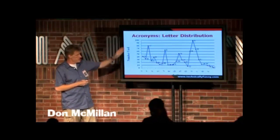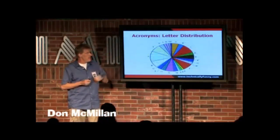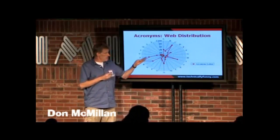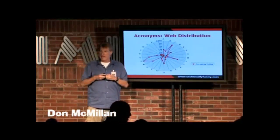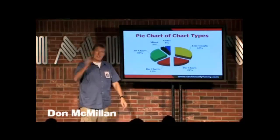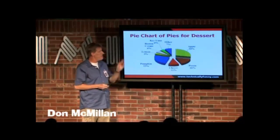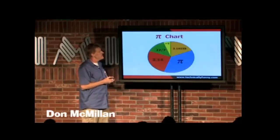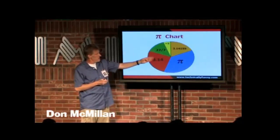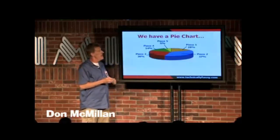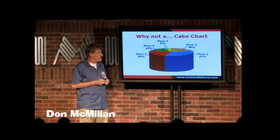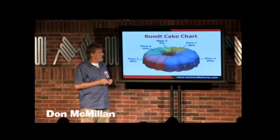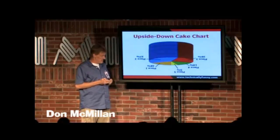Here's an acronym letter distribution: C's, I's, E's, N's, and S's are the most common letters I use in my acronyms. Here's a pie chart letter distribution. Back to the charts again — here's a pie chart of chart types: 3D charts, bar charts, pie charts. Here's a pie chart of pies for dessert: lemon, pumpkin, cherry, pecan, apple. Here's a pizza pie chart, a pot pie chart, a pie chart with values of pi for the nerds — 3.14159, 22/7, 3.14, and pi itself. And why don't we have a cake chart? There's a cake chart, a birthday cake chart, a wedding cake chart, a bun cake chart, an upside-down cake chart. I think I've covered all the charts. Any questions?